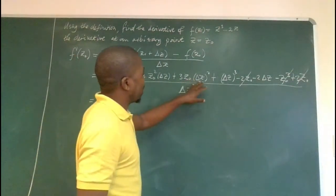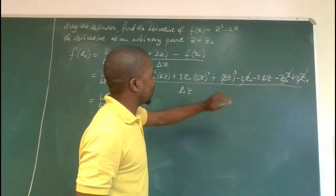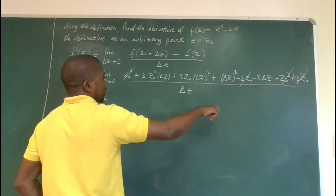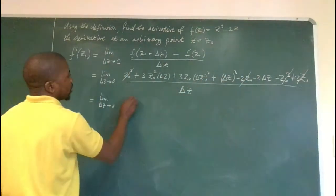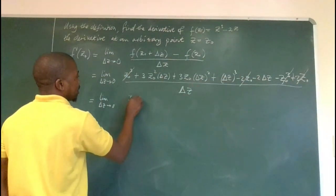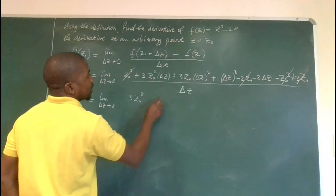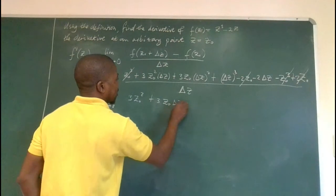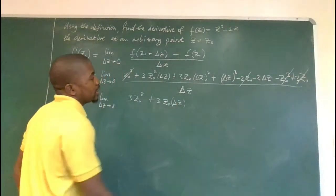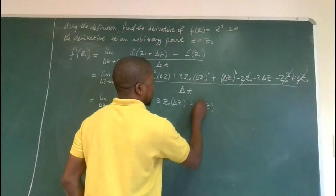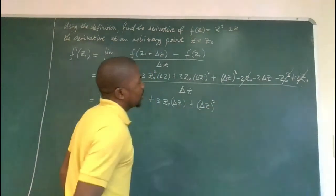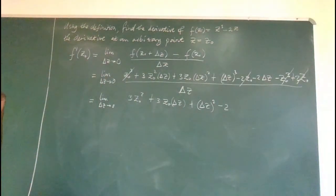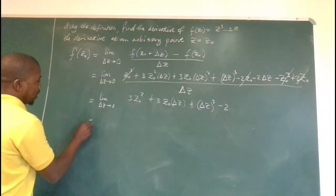And we remain with a quadratic expression or a cubic function of delta z. So we can cancel delta z, delta z everywhere. So we remain with three z naught squared plus three z naught delta z, and plus delta z squared, this one, and then lastly minus two.